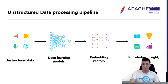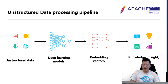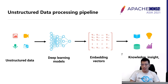A typical unstructured data processing pipeline works as follows. After data is stored in systems like distributed file systems or object storage, models are trained through a neural network. Today there are many pre-trained models which work well with a little fine-tuning. After data is inferenced into embedding vectors representing its semantics, it can be widely used for searching, recommendation, advertisement, and many other scenarios via approximate nearest neighbor search.